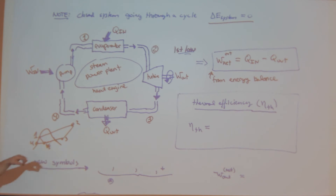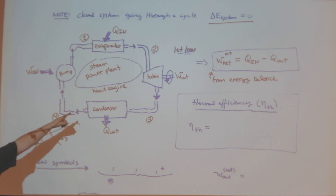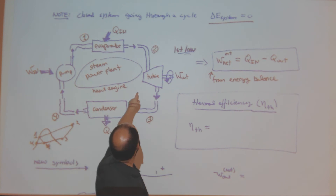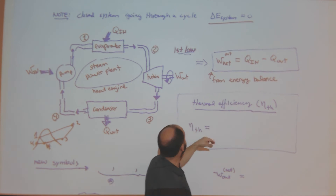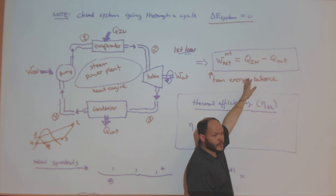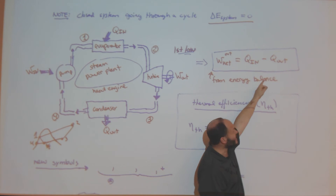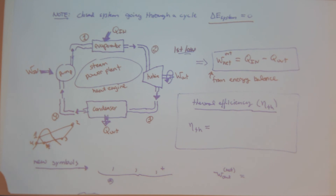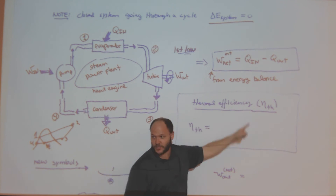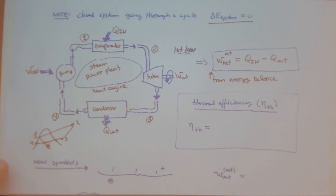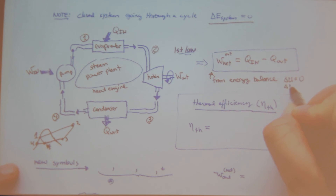From the energy balance: how do I know that W_net,out equals Q_in minus Q_out? This is a cycle, so doing the energy balance: Q_in + W_in − Q_out − W_out = ΔU = ΔE = 0. Therefore W_net,out = Q_in minus Q_out.